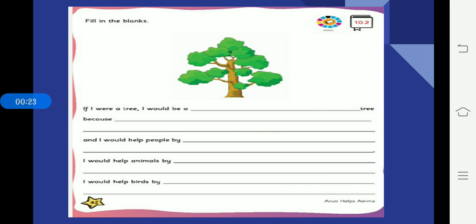So in 10.2 page number 42 you have fill in the blanks. One tree is given there, so what you have to do is you have to write about this tree. If I were a tree, I would be a dash tree means it may be any tree, like banyan tree or coconut tree or palm tree. Whatever you like you can write the tree and why, because you have to describe the tree.